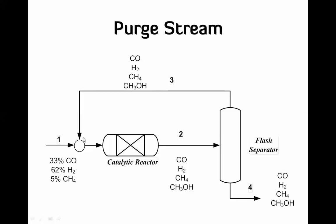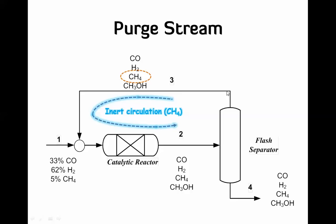There is one more thing to keep in mind: there is one component — methane — which didn't contribute to the reaction. It's an inert material present in the feed that we can't get rid of. Before, it just went in and out without causing a problem, but now if we recycle this stream, the methane gets recycled and mixes with the fresh methane. It starts accumulating — circulating instead of leaving — so instead of 5%, you get 6, 7, 8, 9, 10% and it keeps going up because it's not consumed and not thrown away.